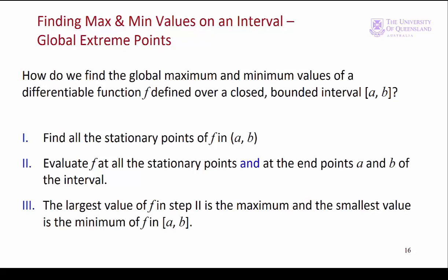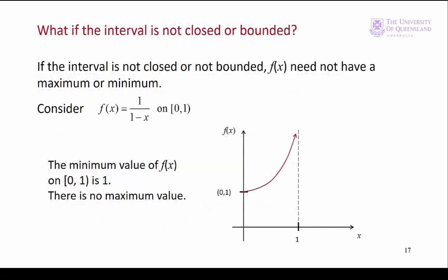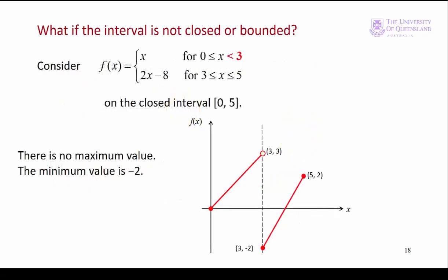Before we go on to an example, let's look at a couple of cases where we don't have extreme points. In example 1, we have a function that's not closed and not bounded — we have a half open interval and the function heads off to infinity, so there's no way we can draw a circle around the graph of that function. The second example is a little trickier: we have a closed interval 0 to 5 but our function is discontinuous at x equals 3 and the interval 0 to 3 is not closed.